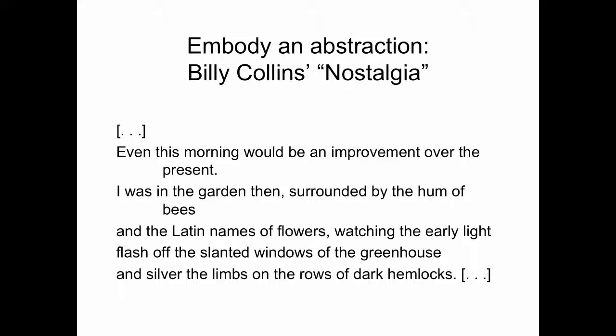"Even this morning would be improvement over the present. I was in the garden then, surrounded by the hum of bees and the Latin names of flowers, watching the early light flash off the slanted windows of the greenhouse and silver the limbs on the rows of dark hemlocks." The imagery is in lines 2 through 5. The abstraction being embodied here is nostalgia—I want to be back at a better time, regret, frustration, that sense of "I really don't want to be here right now." Everything after the first line is embodying that abstraction. The poet actually has to explain it in specific tactile, visual, and oral terms.